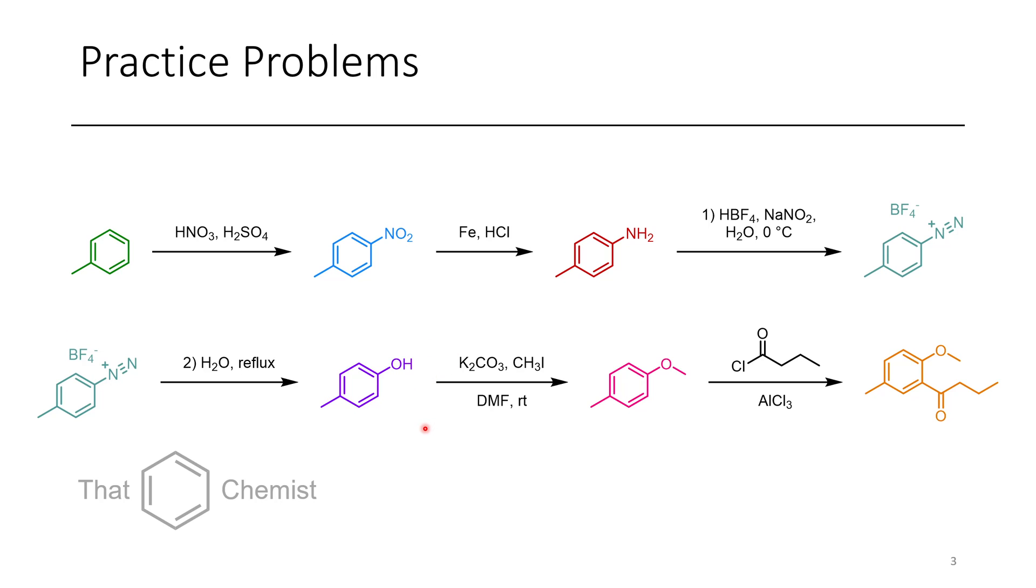The other thing is, Fries rearrangements can sometimes be harsh and lead to other products, so this transformation overall should be the cleanest. Additionally, if we did acylation in the ortho position here, it could be that because we still have a phenol open, that this could add a second equivalent of the acylating agent, because phenols are really strong ortho-para directors. Whereas in this case, because we have the methoxy group, it should stop after one has been added.